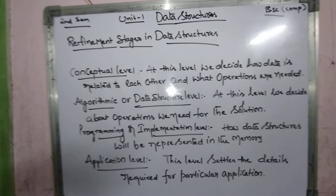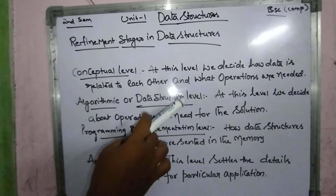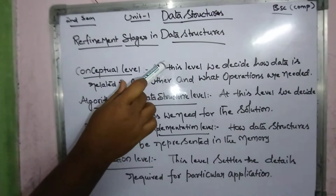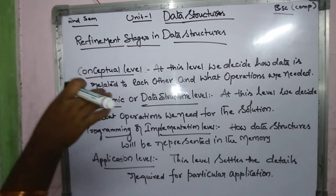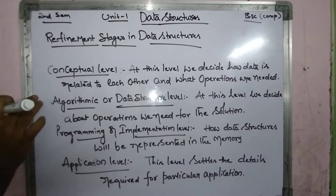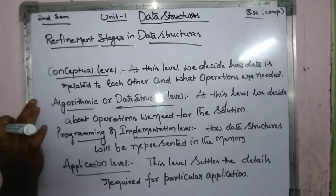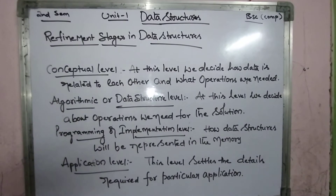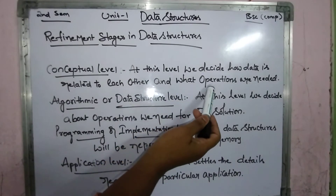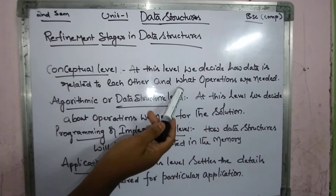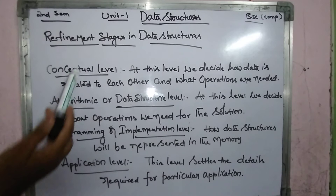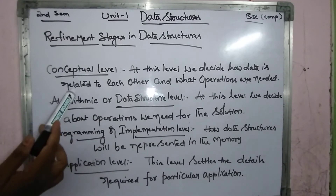In the conceptual level, we decide how the data is related to each other and what operations we need. We decide how the data is connected to each program instruction and what operations are needed. This is what we check in the conceptual level, which is the first level in the top down approach.